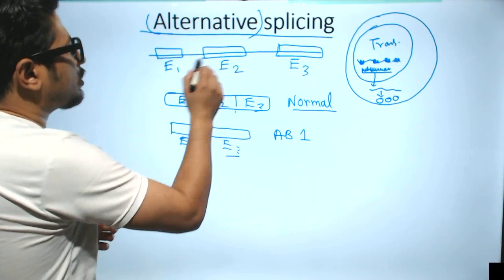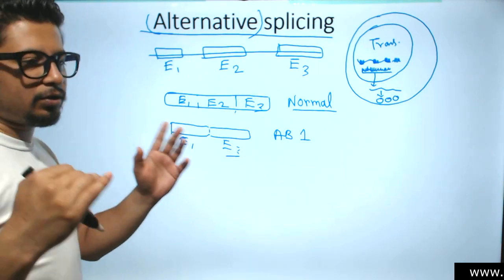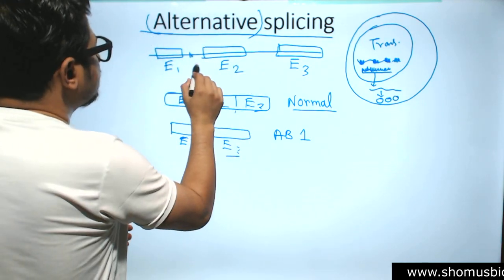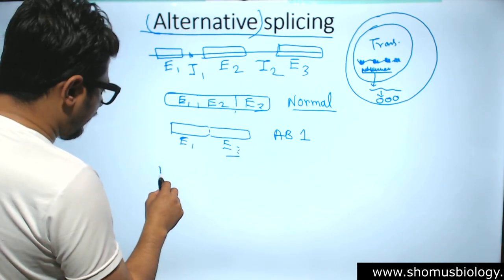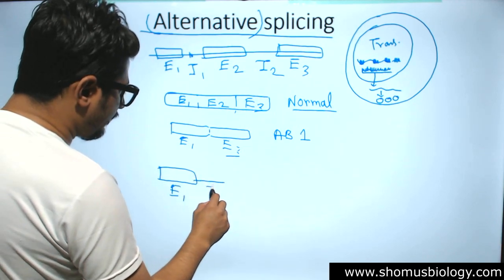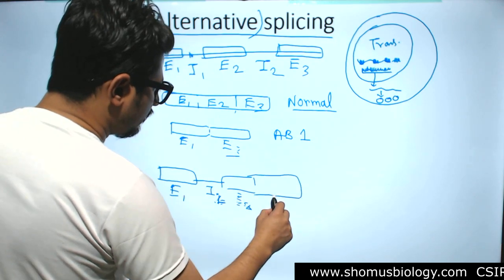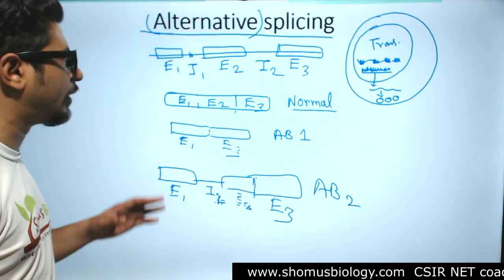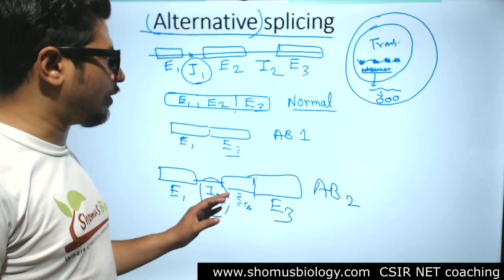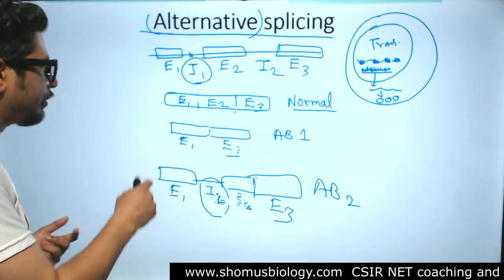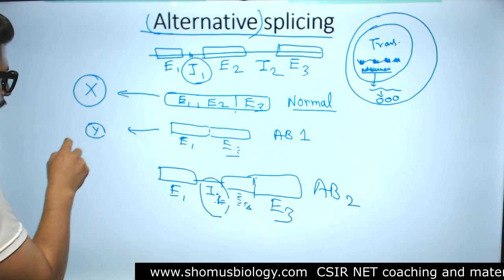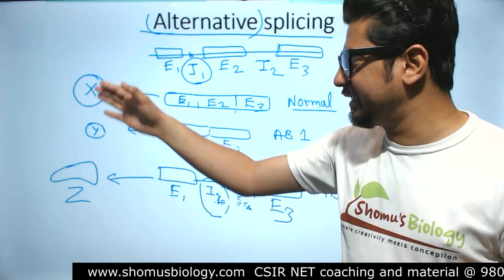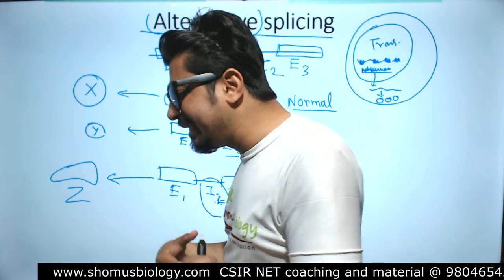Another example: usually introns must be clipped out, but in some cases a sequence present in an intron causes it to be retained. So instead of the normal product, we have exon 1, then intron 1, then exon 2, then exon 3. This intron retention produces a different, larger form of RNA. The protein products from these variants — protein X, protein Y, protein Z — will have different structures and different functions in the cell.